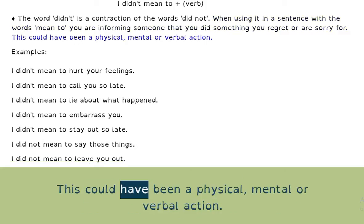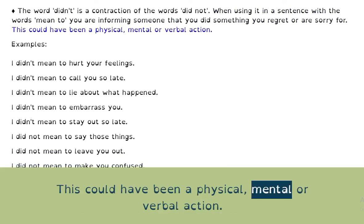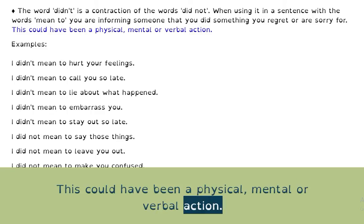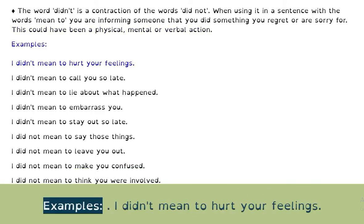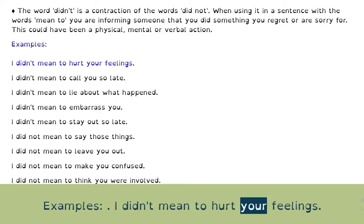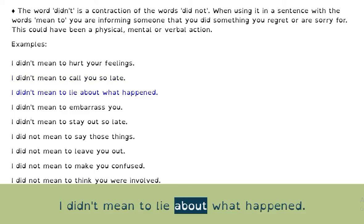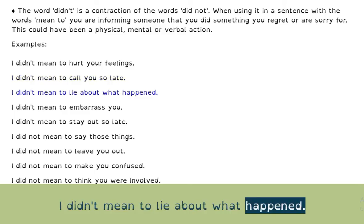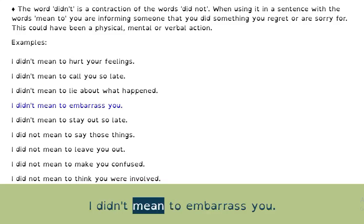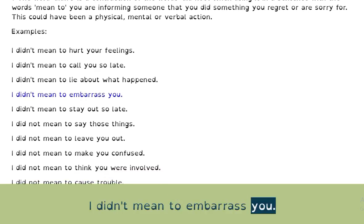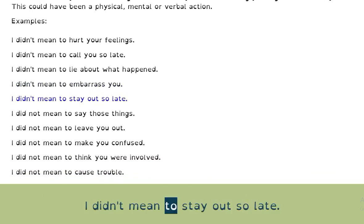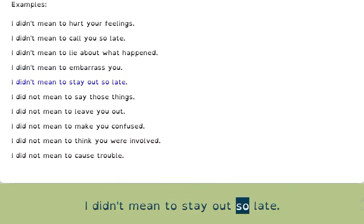This could have been a physical, mental or verbal action. Examples: I didn't mean to hurt your feelings. I didn't mean to call you so late. I didn't mean to lie about what happened. I didn't mean to embarrass you. I didn't mean to stay out so late.